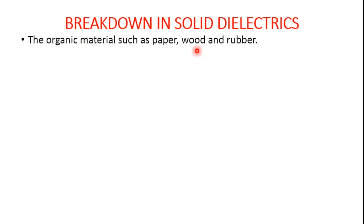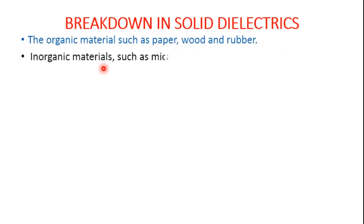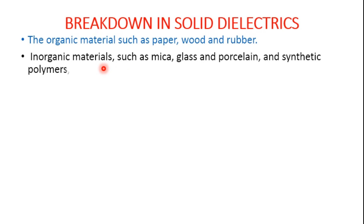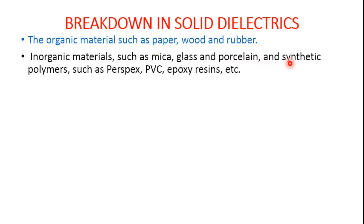One is organic materials — these include paper, wood, and so on. Another is inorganic materials such as mica, glass, and porcelain. There are also synthetic polymers, PVC, epoxy resins, etc.